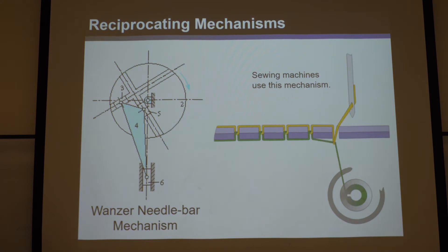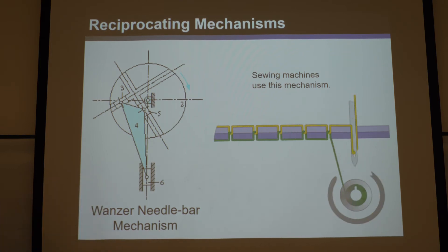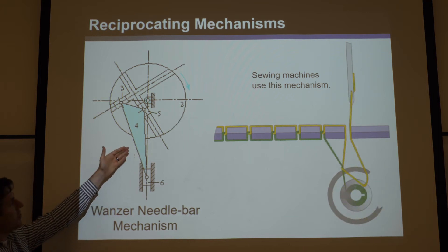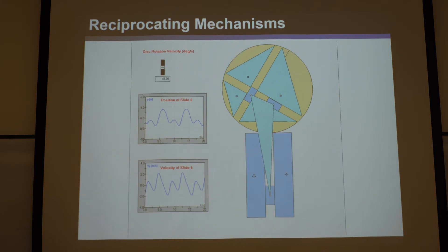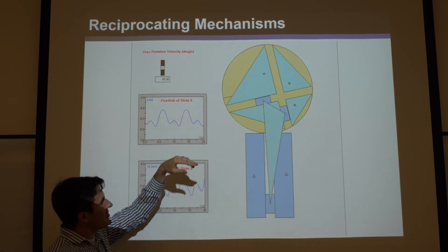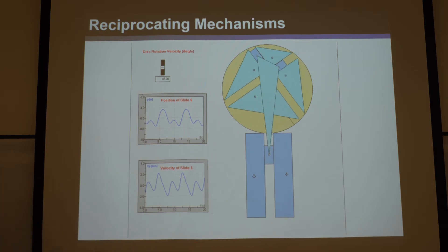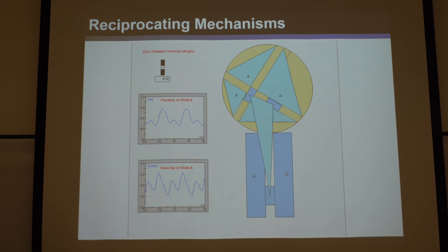Sometimes you need oscillation with different amplitudes at different points. The Wanzer needle-bar mechanism, used in old 1800s sewing machines, is a clever design where some amplitudes are small and some are large, so the needle goes in and out of the cloth precisely. It's fascinating to take apart old sewing machines to see this.